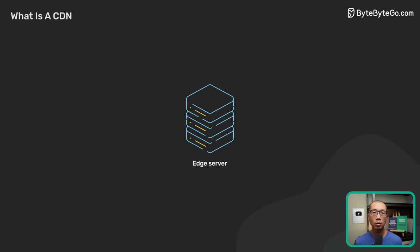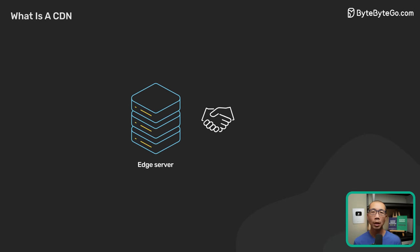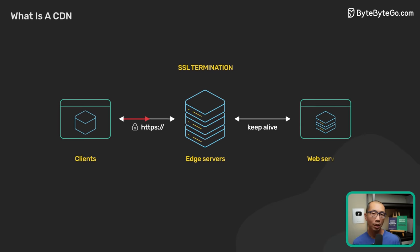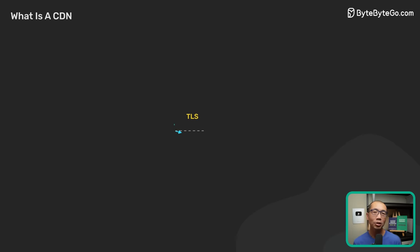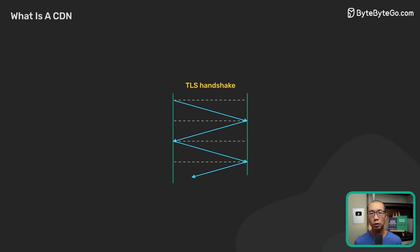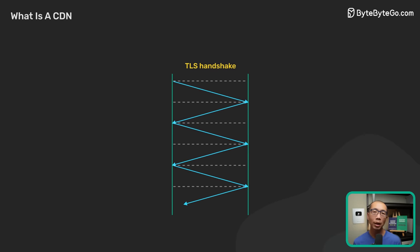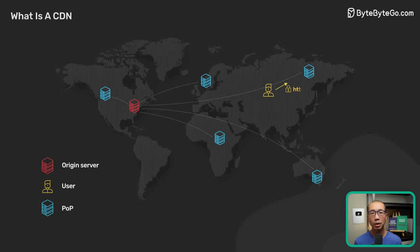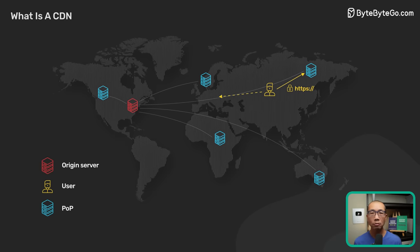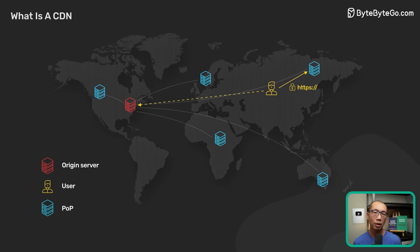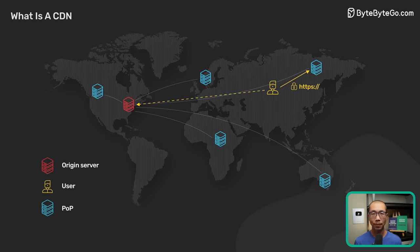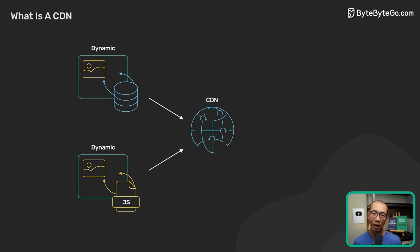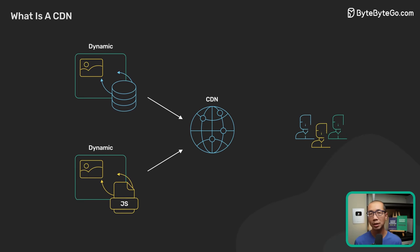The edge server also serves a very important role in the modern HTTP stack. All TLS connections terminate at the edge server. TLS handshakes are expensive — the commonly used TLS 1.2 takes several network round trips to establish. By terminating the TLS connection at the edge, it significantly reduces the latency for the user to establish an encrypted TCP connection. This is one reason why many modern applications send even dynamic, uncacheable HTTP content over the CDN.